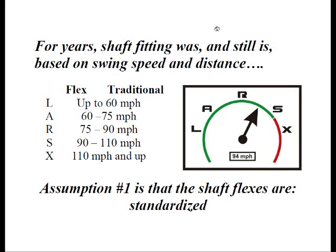For years, shaft fitting was — and I guess still is — based on swing speed and distance. There are five traditional flexes. The L-Flex, short for ladies, was designed for swing speeds up to 60 miles an hour. The A-Flex, or senior flex — where A stands for amateur — was designed for 60 to 75 miles an hour. R-Flex, or regular, for 75 to 90. S-Flex, or stiff, for 90 to 110 miles an hour. And X-Flex, or extra stiff, for those with club head speeds above 110 miles an hour.